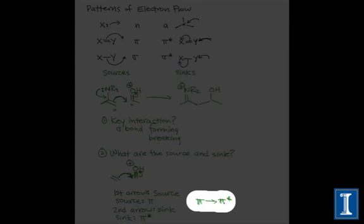And we use this notation to indicate key electron flow, or key interactions. The source comes before an arrow, and the sink to which that source flows comes after the arrow.